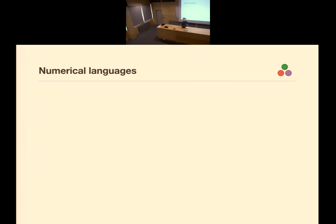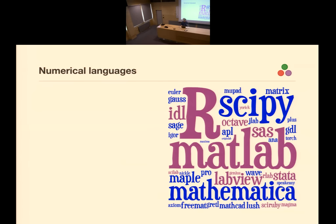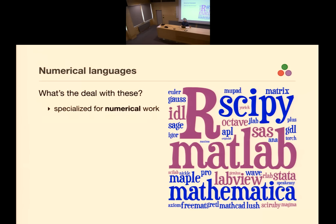I'm going to start with an observation about numerical programming languages — this funny, idiosyncratic lot of languages. One of my co-founders put them into this graphic, roughly proportional to their popularity: R, MATLAB, those are the big ones; Mathematica, SciPy. What makes them numerical? The obvious answer is that they're specialized for numerical work, which also gives you a clue why there are so many of them.